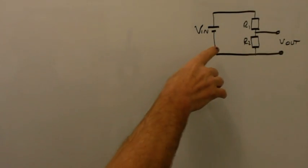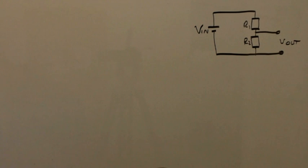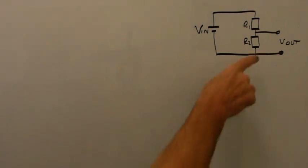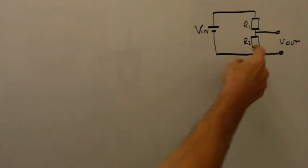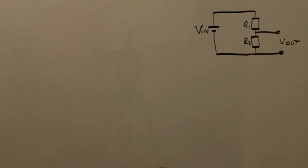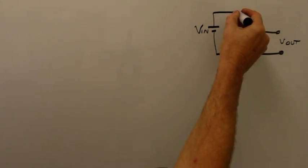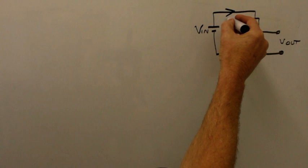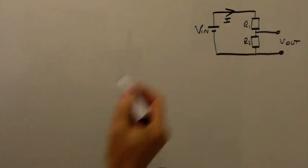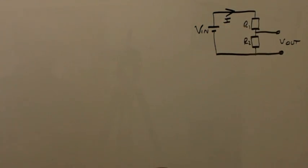I've made a little diagram of the circuit in the top right-hand corner. It's important to stress that we are determining the output voltage under no load conditions, which means that there is no load resistance connected to the output. Now let's look at the current flowing through the circuit — I'll mark the current on the diagram. Here we have I, which is the current flowing through the circuit.